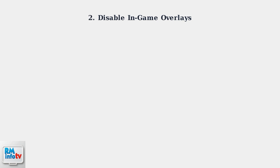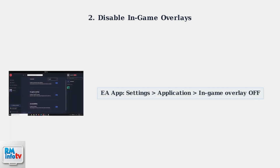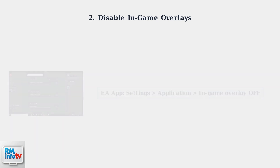First, disable in-game overlays from three main applications, as these overlays often conflict with the game's mouse control system. To disable the EA App Overlay, go to Settings, then Application, and turn off the In-Game Overlay option.